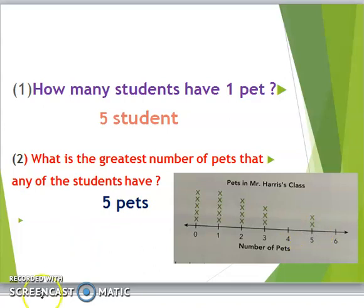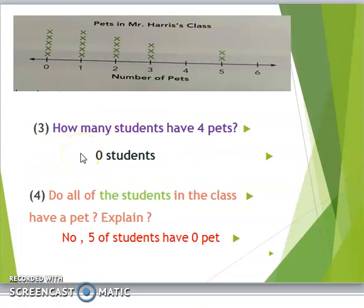Let's move to the next question. How many students have 4 pets? This is about 4. Remember, we don't have any x's here, so 0 students.